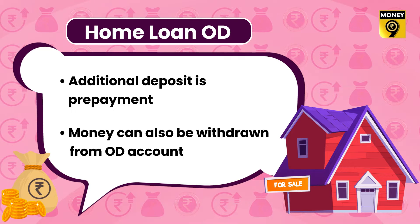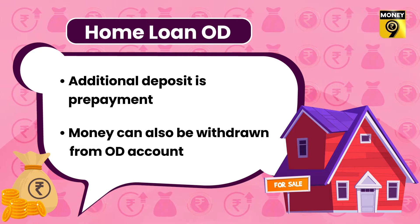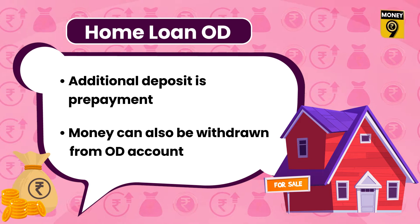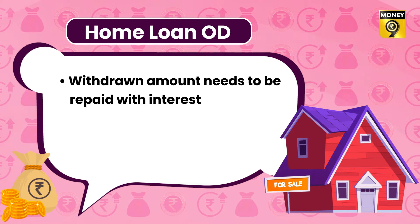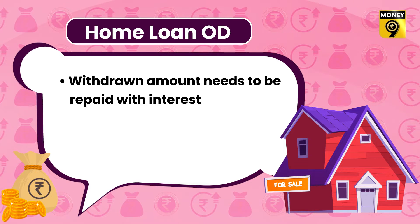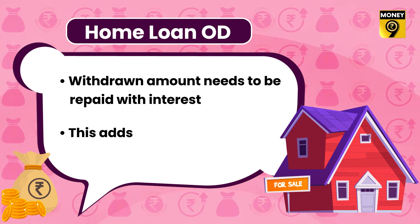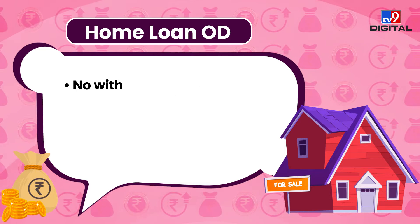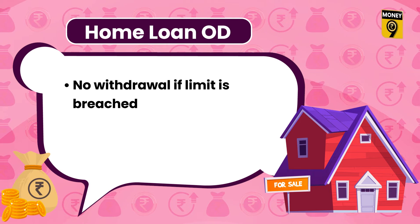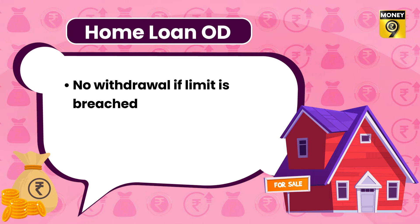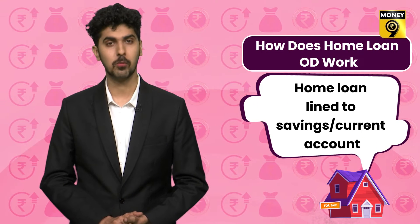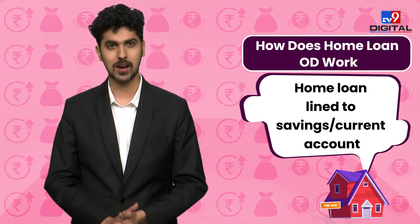You can also withdraw money from your home loan account, just like you put extra money in the account for prepayment of your loan. If needed, the withdrawn money will have to be paid back with interest. The money withdrawn will increase the principal of your home loan. Withdrawals will not be allowed after the limit is reached. If you opt for the home loan overdraft facility, the bank will link your home loan account with your current or savings account.